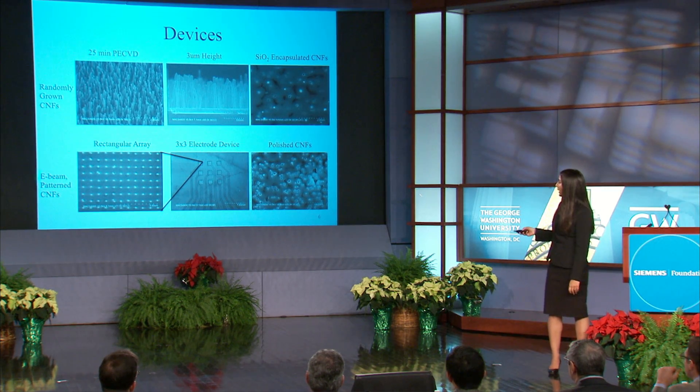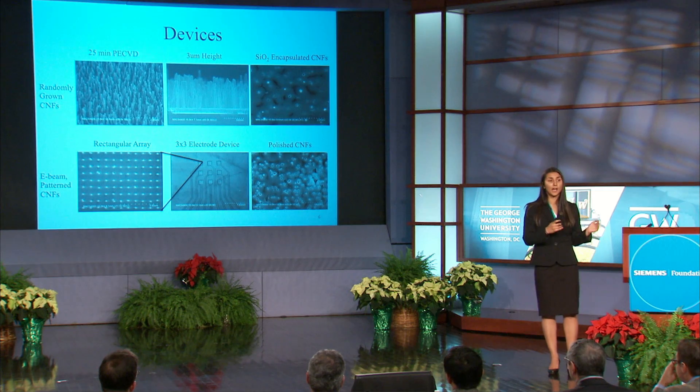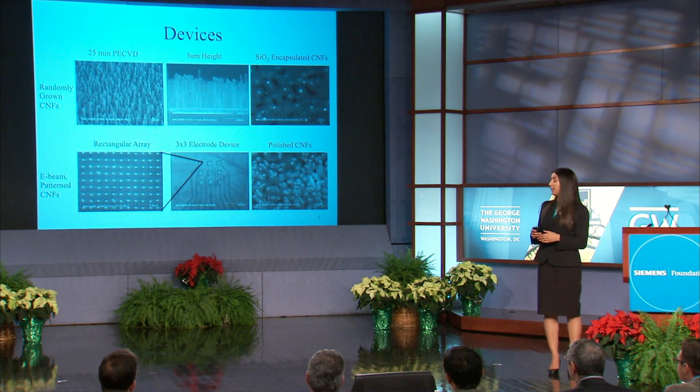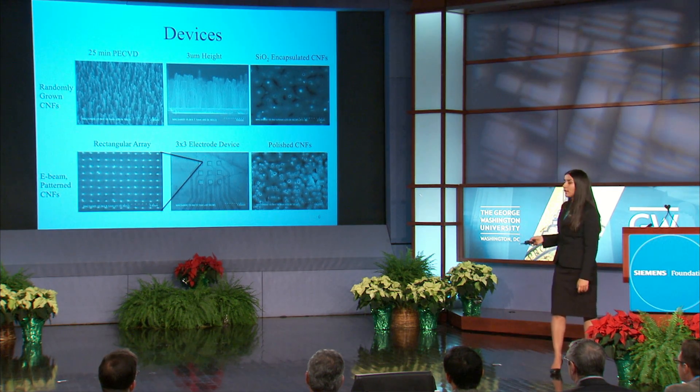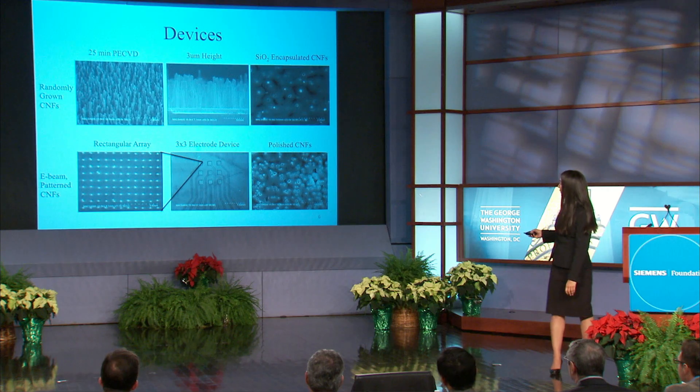The second configuration is a rectangular array of patterned carbon nanofibers, also vertically aligned, on a lithographically etched device. Each of these nine pins on this 3x3 device contains a rectangular array. After fabrication, the carbon nanofibers were encapsulated in silicon dioxide, which makes them very robust. After that, I polished them both chemically and mechanically to expose the tips of the carbon nanofibers for future active site binding.